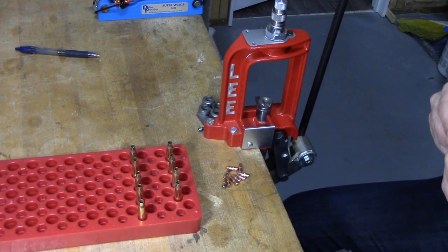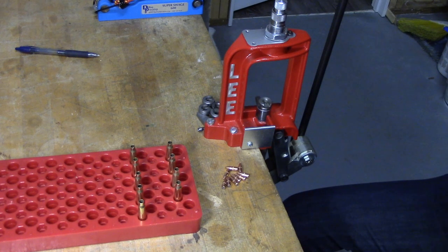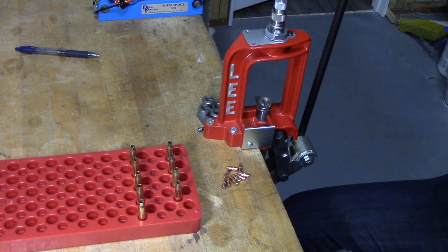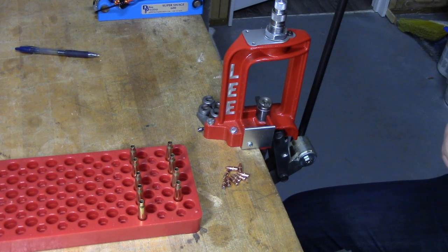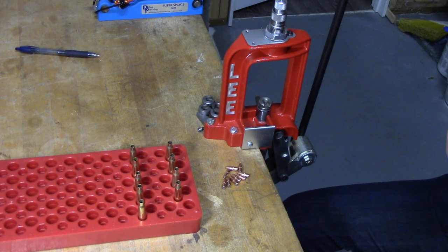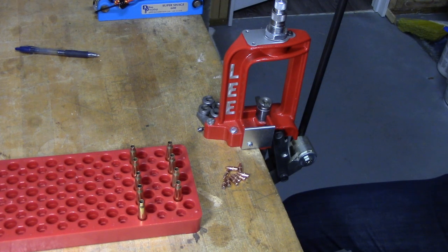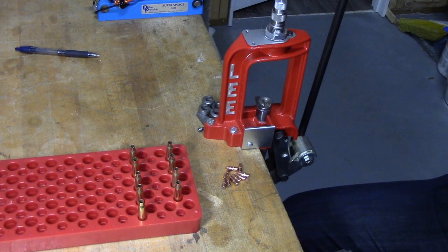There is one more step after this, and it's actually crimping the bullet. Now, there's some controversy on whether you should crimp a rifle case or not, and I'm not going to get into that, but my way of doing it is if it is a bolt gun, I don't worry too much about the crimp. If it is a semi-automatic gun or a tube-fed gun, like a lever action, you definitely want to put a crimp on it.